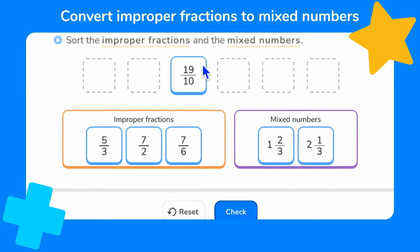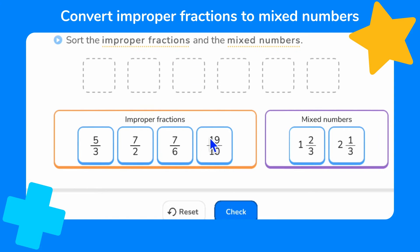What do you think about 19 tenths or 19 over 10? Well, it doesn't have any whole numbers and it does have a numerator greater than the denominator, so it must be an improper fraction.